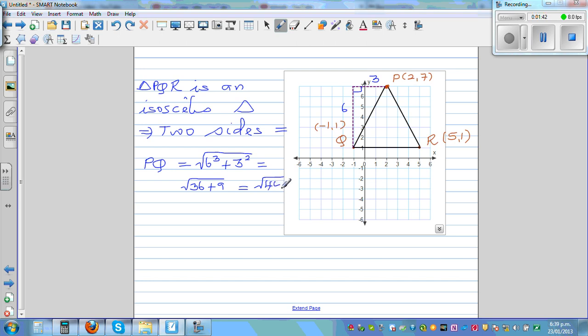To be exact, square root of 45, if you want to write in the surd form, square root of 45 is the same as writing square root of 9 times square root of 5. So to write in the surd form, PQ is 3 root 5 units.